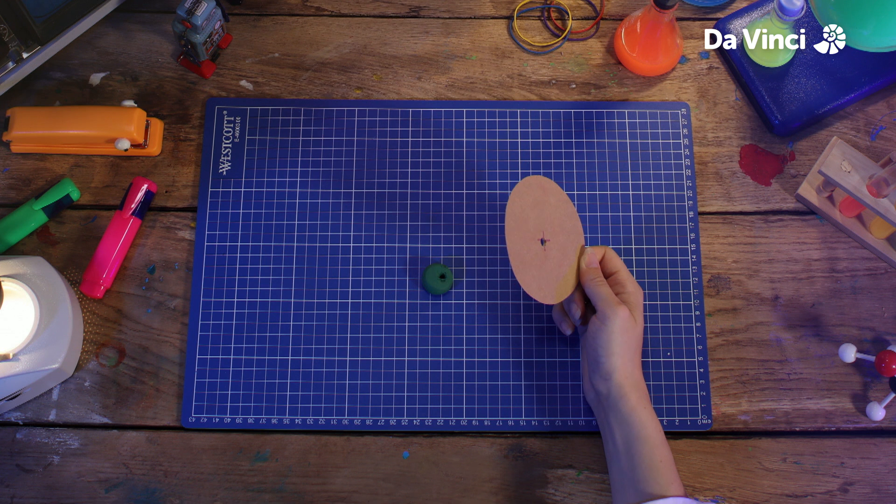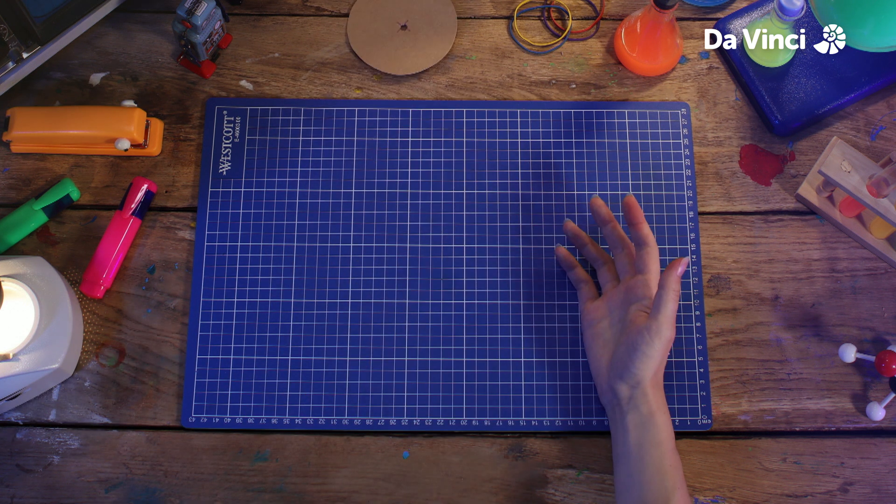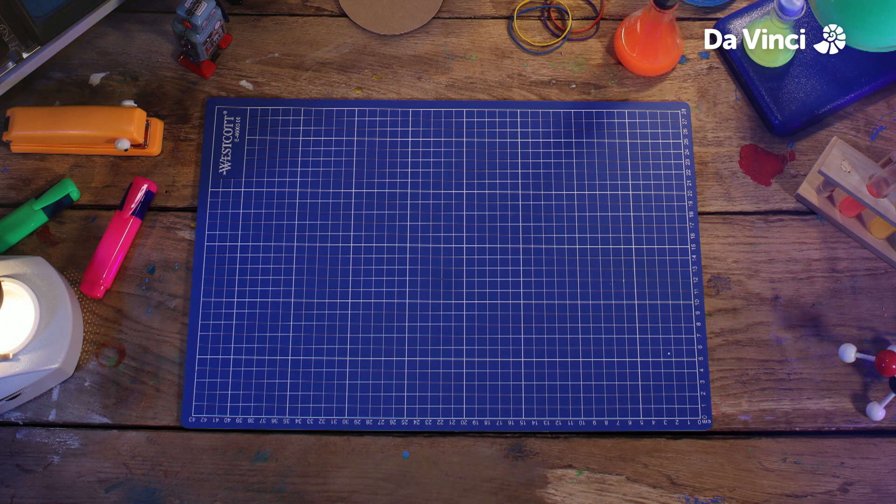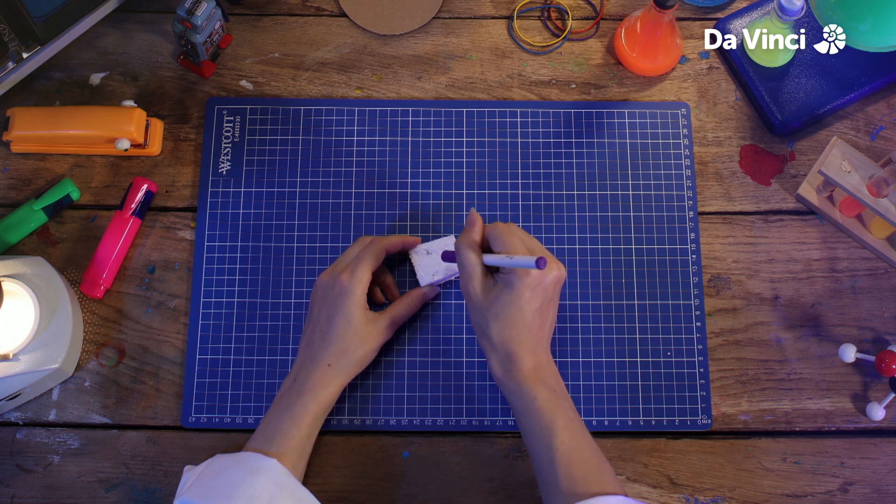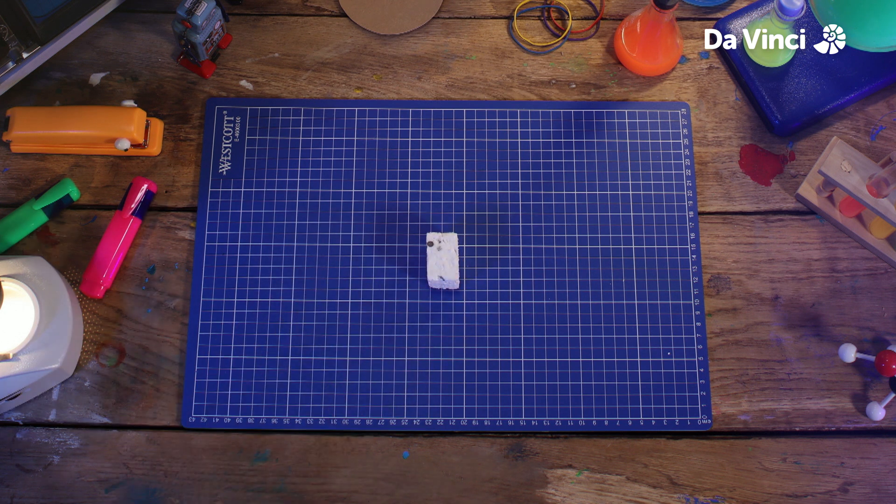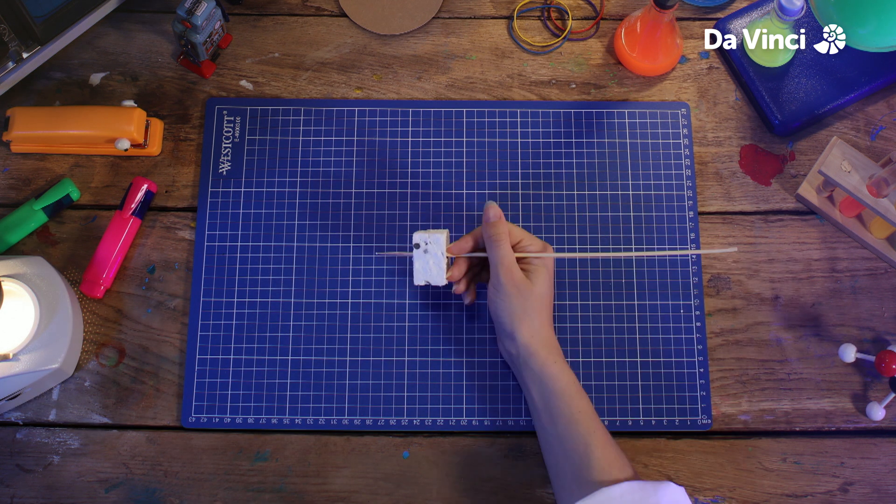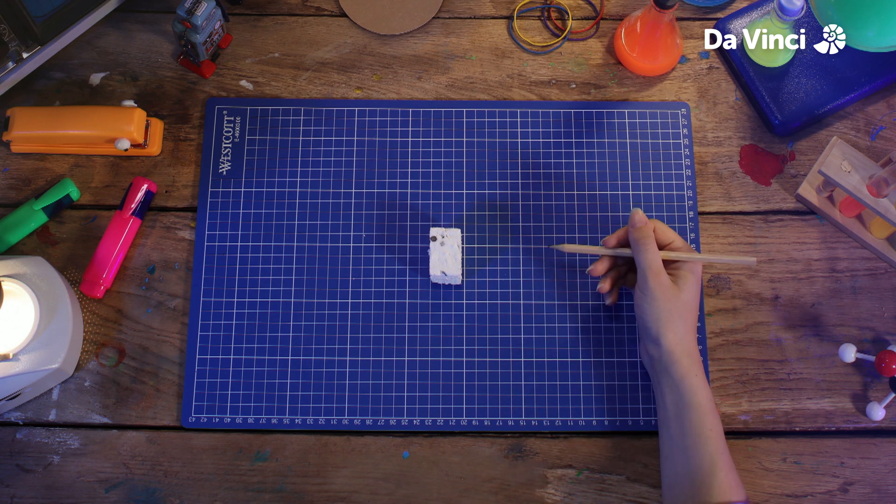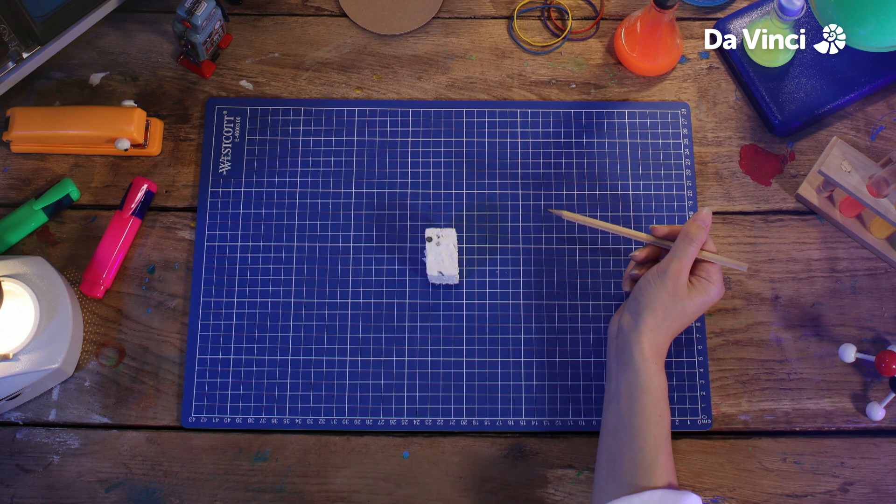Just going to take this away and put this to the side. Now we can take our styrofoam, mark roughly in the center of it, and use our skewer to punch a hole right through the middle. And again, using the pencil to make it a bit bigger.